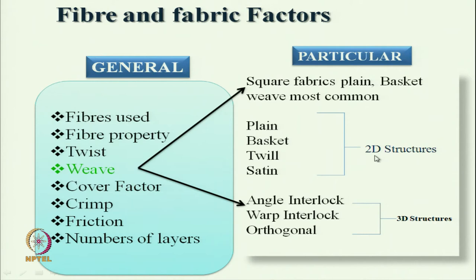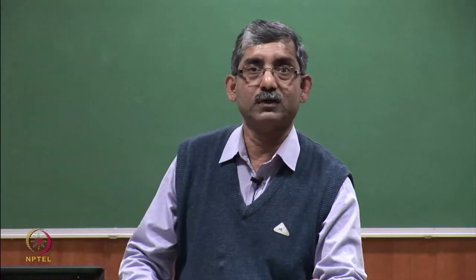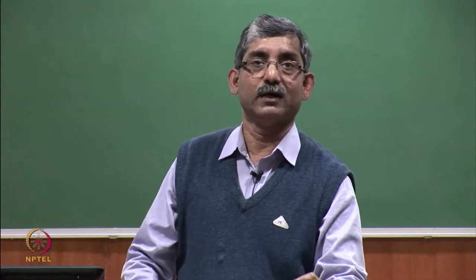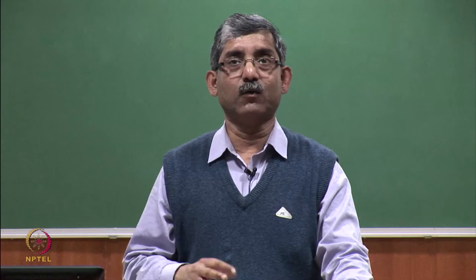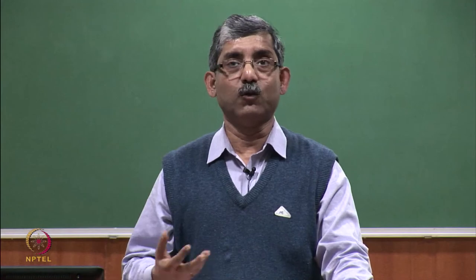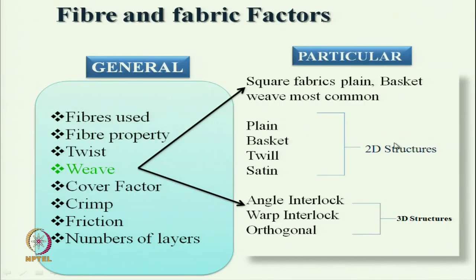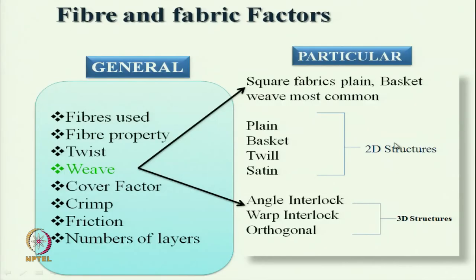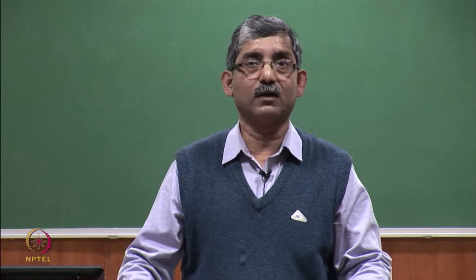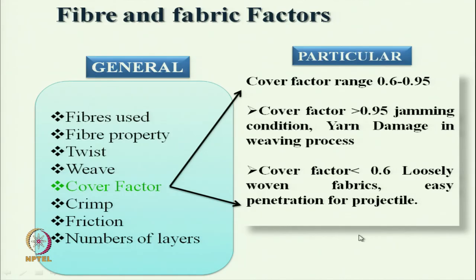As far as weave structure is concerned, 2-dimensional and 3-dimensional fabrics are used. The main idea is to use square fabrics keeping ends per inch and picks per inch the same, so that during impact both warp and weft come into action and perform equally. Basket weave is most commonly used; apart from that, plain, twill and satin structures are also used. For 3-dimensional structures, angle interlock, warp interlock and orthogonal structures are used.